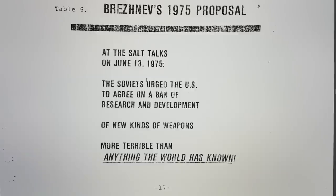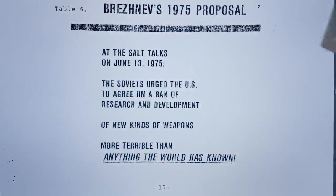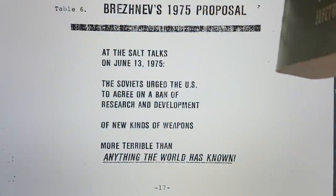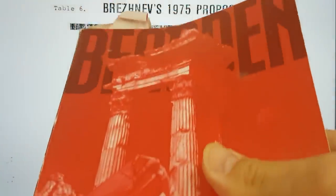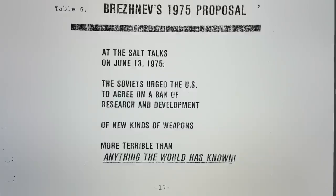It says the Soviets urged the US to agree on a ban of research and development of new kinds of weapons, more terrible than the world had ever seen. These are non-nuclear weapons, although I believe they can stimulate nuclear effects. Effectively, they are Tesla-based weapons and scalar electromagnetic weapons, and he talks about them in his book Ferdelance. This is Tom Bearden, published first in 1986, two years after the briefing document that was formally classified.